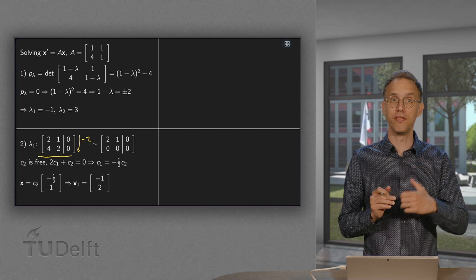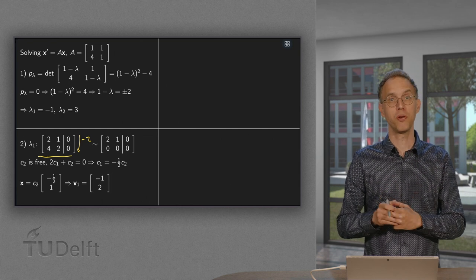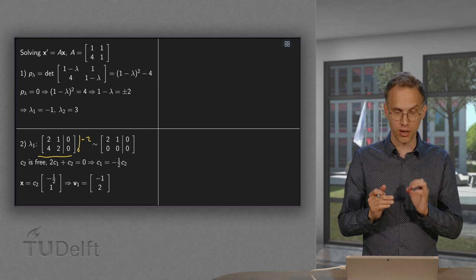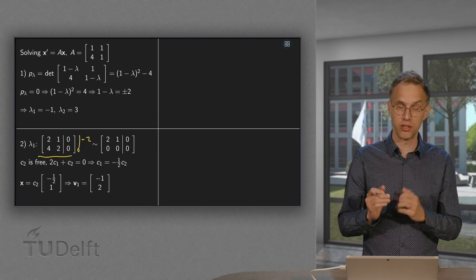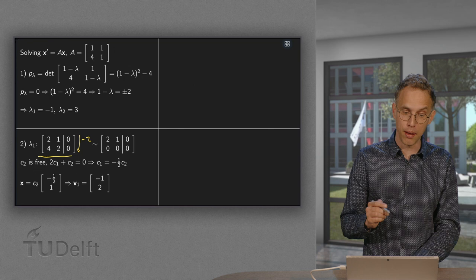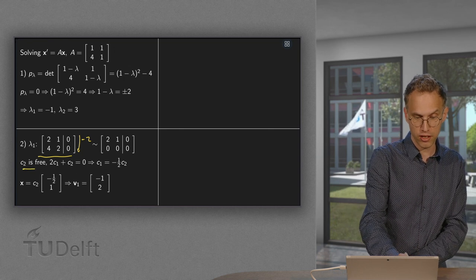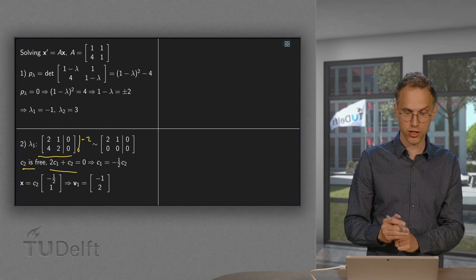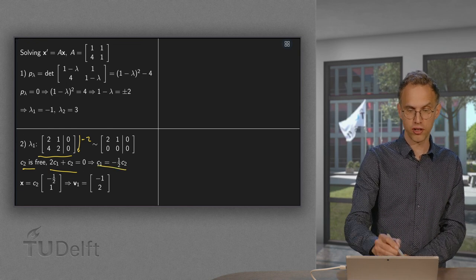That is what you should get. If you do not have a free variable, you only get the trivial solution and there is something wrong. So here you have another check. You should have a free variable. And be careful when solving. C₂ equals 3. 2 times C₁ plus C₂ equals 0 from the first row. So we can solve for C₁.